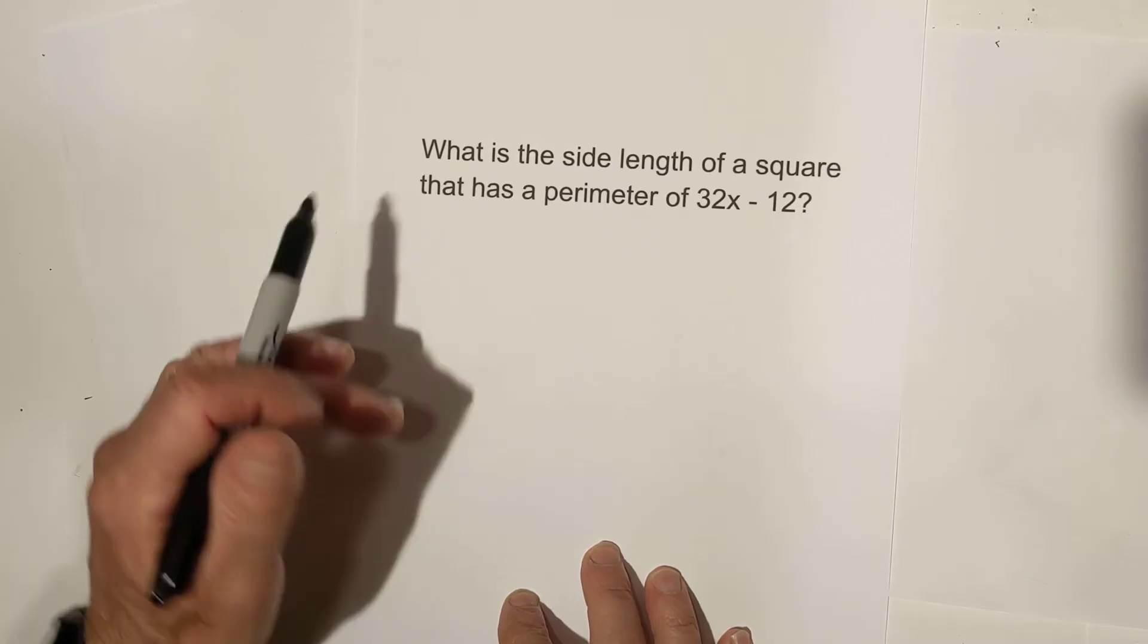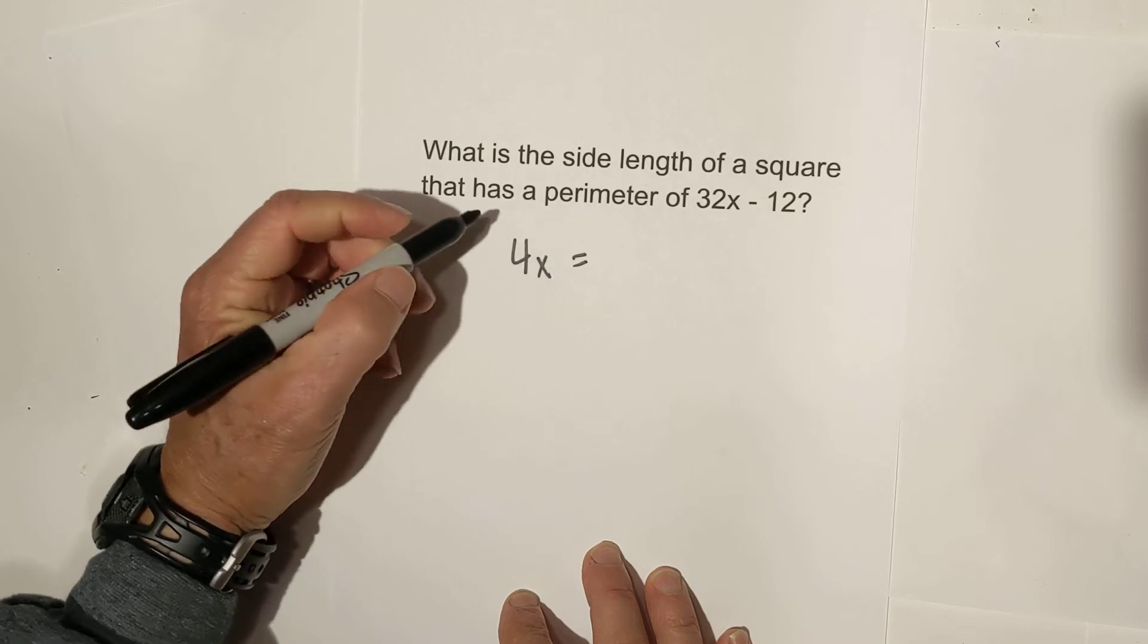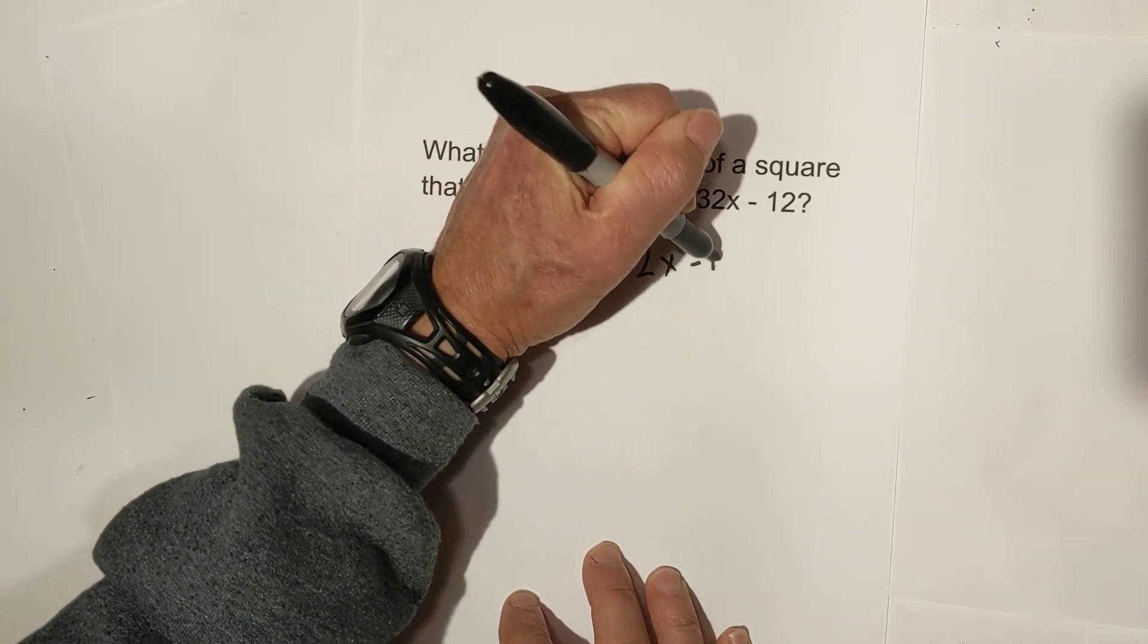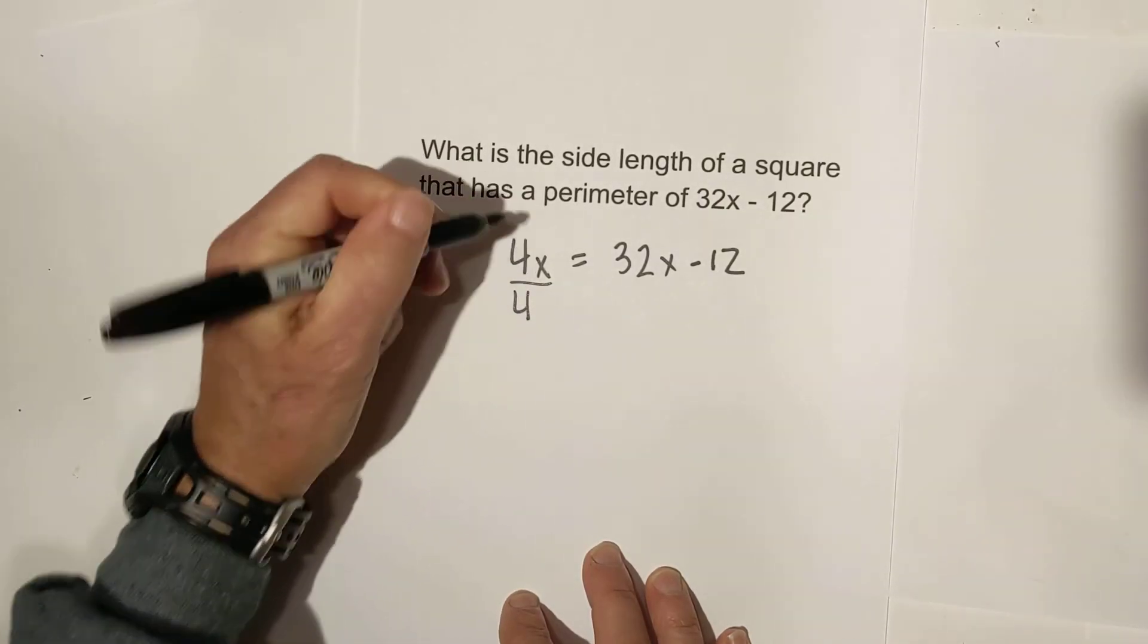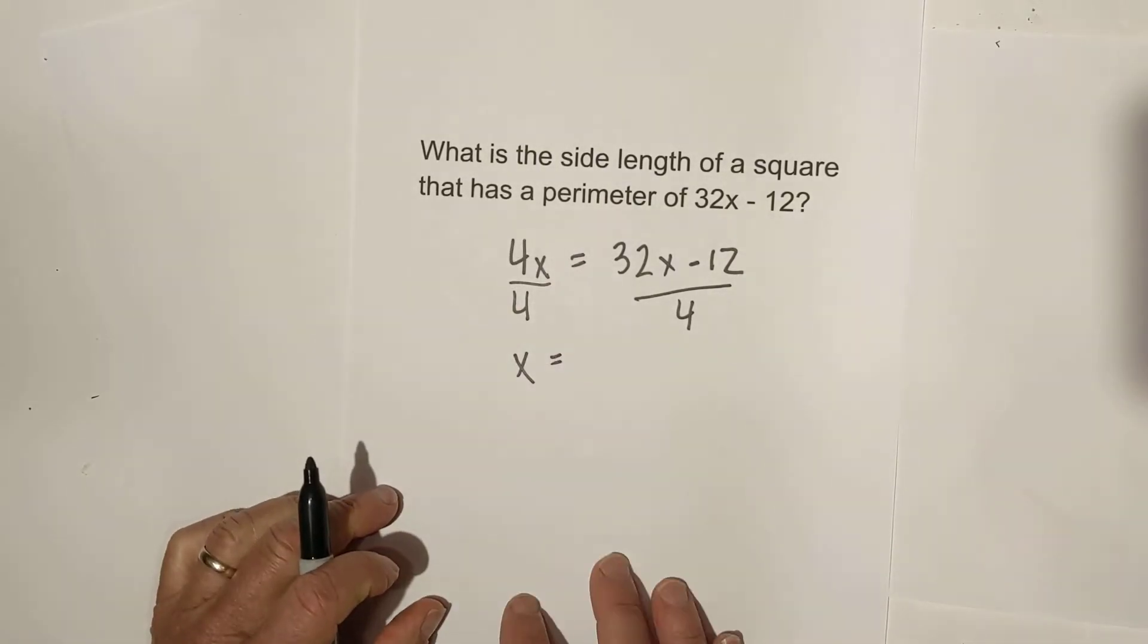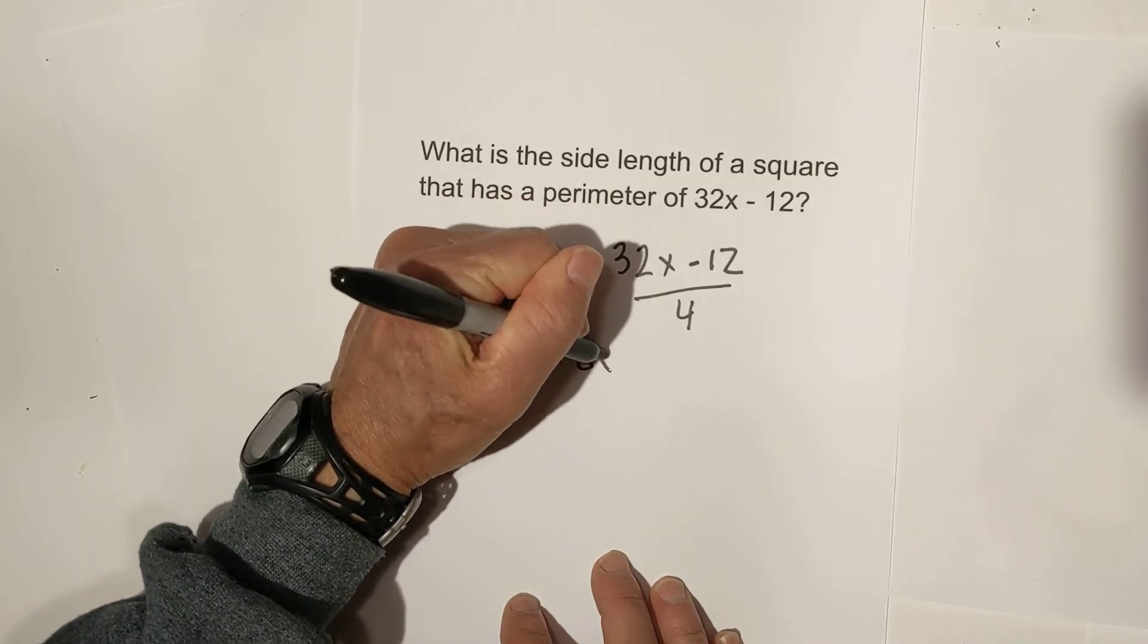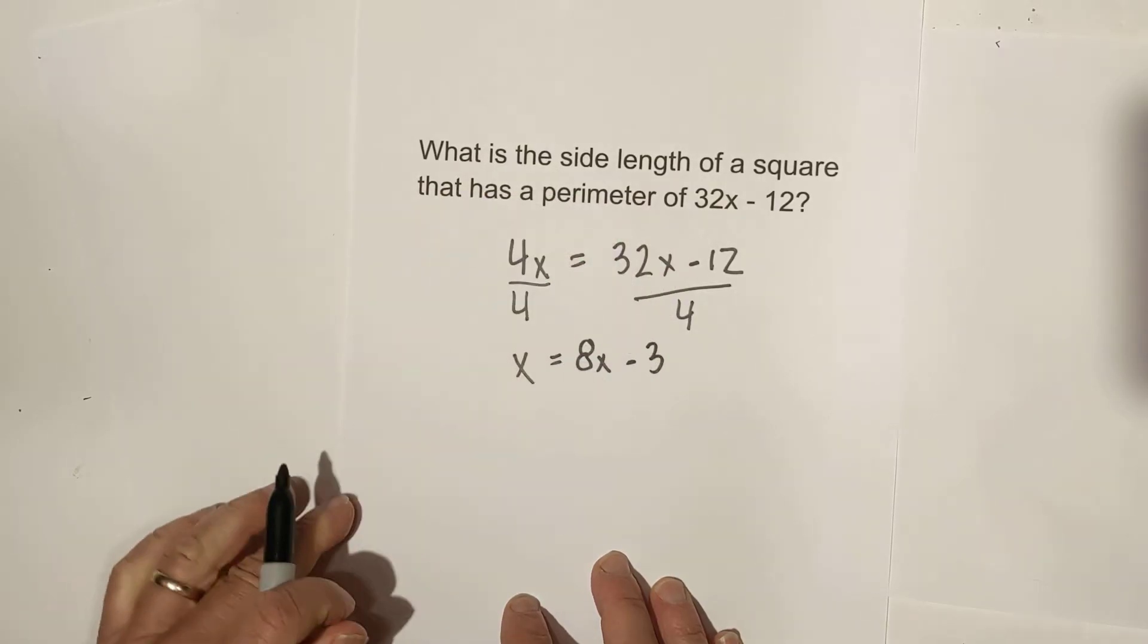So again, what we will do is set up 4x, which is 4 times each side, and it's going to equal 32x minus 12. Then, all we do is get x by itself by dividing by 4. So x is equal to, 4 goes into 32x 8 times, 8x minus, and 4 goes into 12, 3 times.